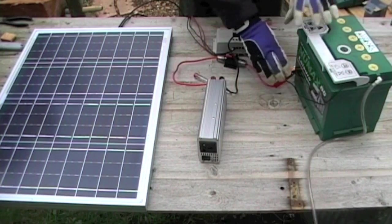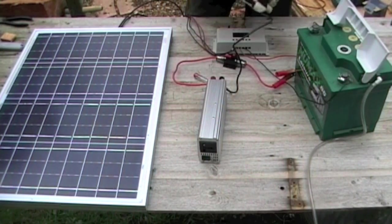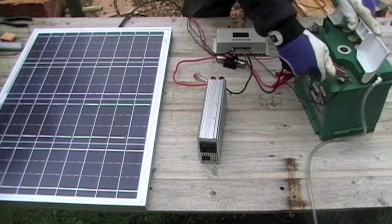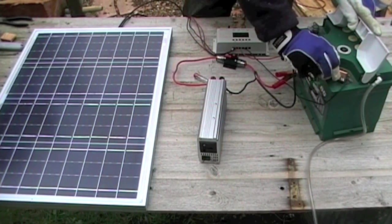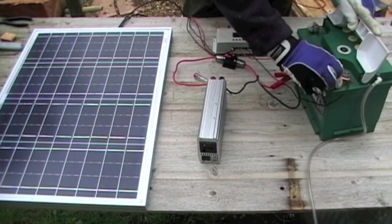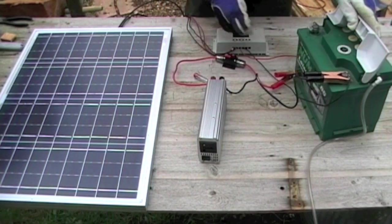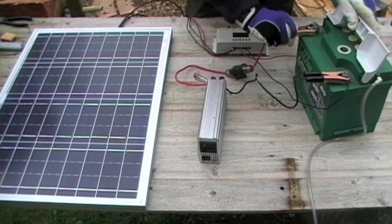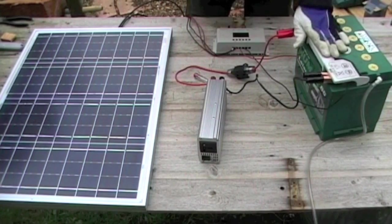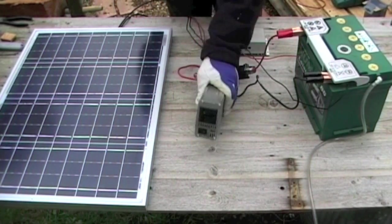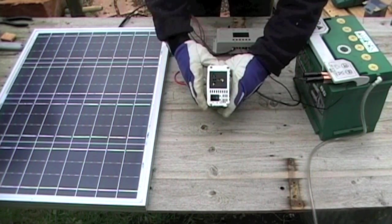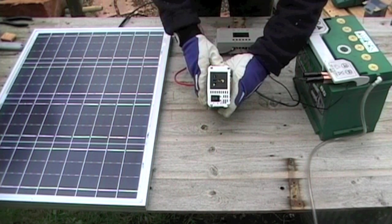These clamps attach directly to the battery terminals. Black cable first, onto the negative terminal. Need to make a good connection. Then the red one. When I switch it on, the fan starts up, so that's working.